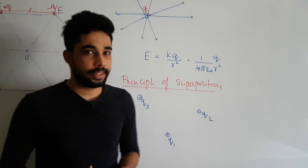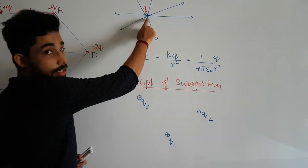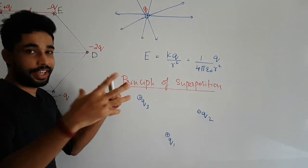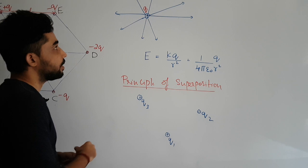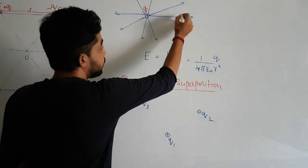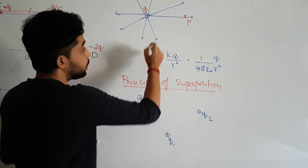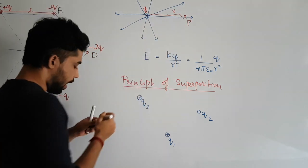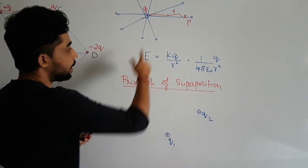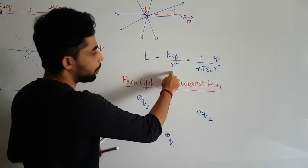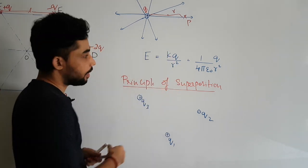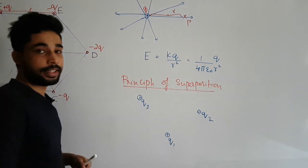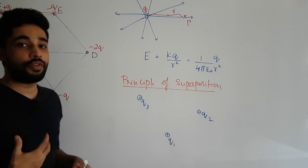Quick basics: if you have a charge in space, it puts out an electric field in all directions. If we consider a point P at a distance R from the charge, the electric field at that point is given by kq by R squared, where k is 1 by 4 pi epsilon naught and epsilon naught is the permittivity of free space.